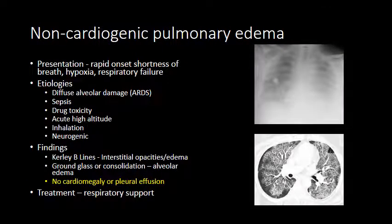Non-cardiogenic pulmonary edema can have a similar appearance on imaging. It tends to be very acute in onset and is not associated with heart failure. The etiologies are broad but include a classic differential: diffuse alveolar damage (also known as acute respiratory distress syndrome), sepsis, various drugs, rapid ascent to high altitude such as flying into Aspen Colorado, inhalation of chemicals, smoke, or heated air, and stroke.